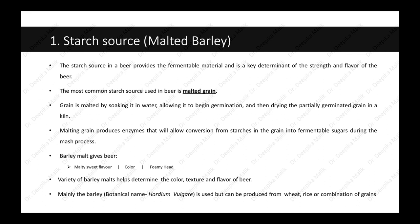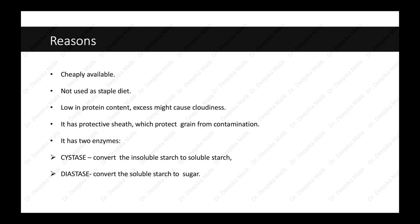Mainly barley — botanical name Hordeum vulgare — is used, but beer can be produced from wheat, rice, or a combination of grains. Grains that are soaked and germinated are called malt. These malted grains produce enzymes that convert starches into fermentable sugars; this conversion process is called mashing. The reasons these grains are used: they are cheaply available, not used as a staple diet, and low in protein content (excess protein might cause cloudiness). They also have a protective sheath which protects the grain from contamination.